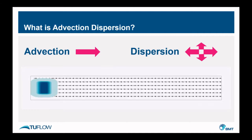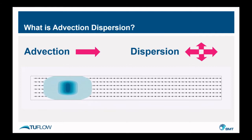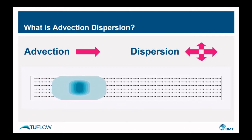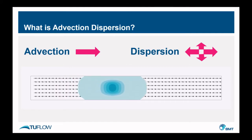The animation here actually demonstrates this really well. This is just a hypothetical flume. You can see here as the plug of contaminant moves down through the flume — it's advected so it's shifting — it's also dispersing at the same time.